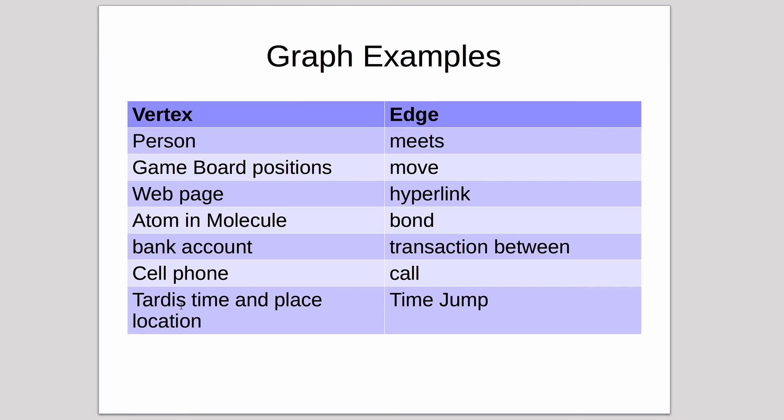Here's an interesting one. If you watch Doctor Who, the TARDIS is a time machine that goes from a certain point in time and place to another point in time and place. The vertex could be those points in time and place, and the edge is the time jump. That might be an interesting project: draw a graph of all the time jumps in however many series of Doctor Who episodes there are.